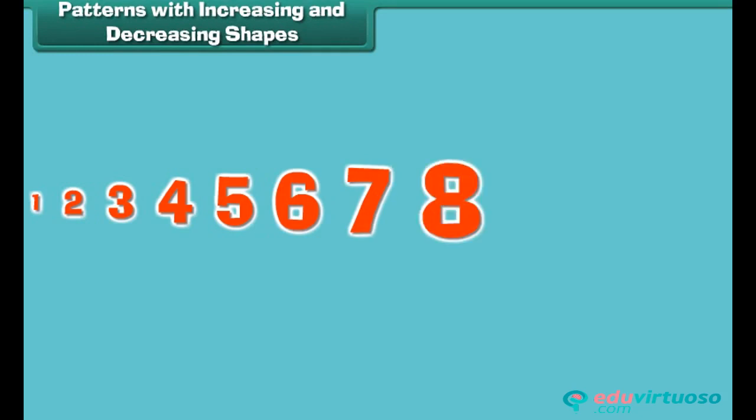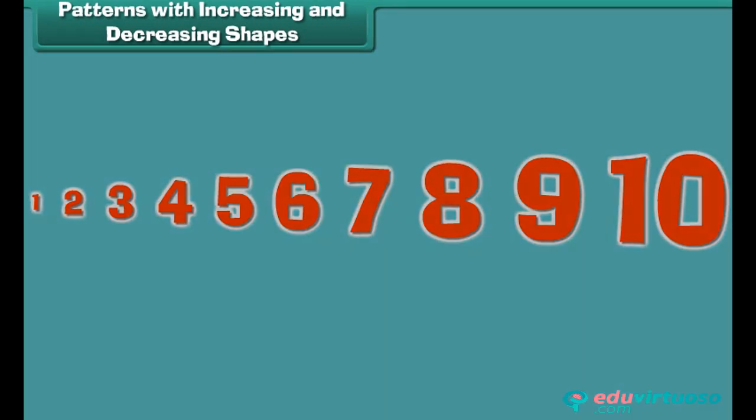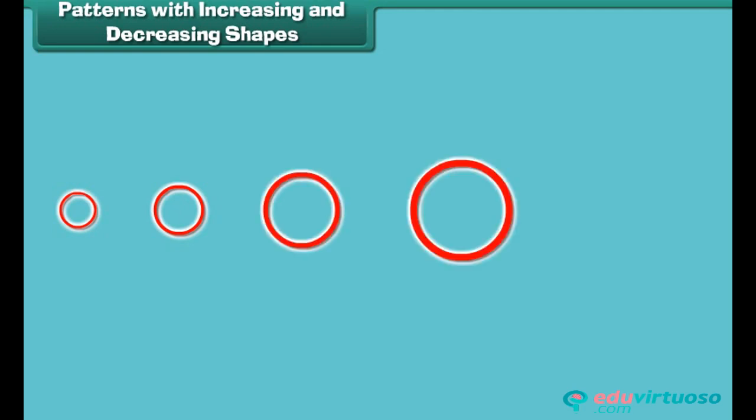Patterns with increasing and decreasing shapes. We can form patterns by increasing and decreasing the number or size of shapes. Let us see how. Look at this arrangement of shapes. One circle, followed by two circles, followed by three circles and so on. This is a pattern because the circles increase in a definite order.